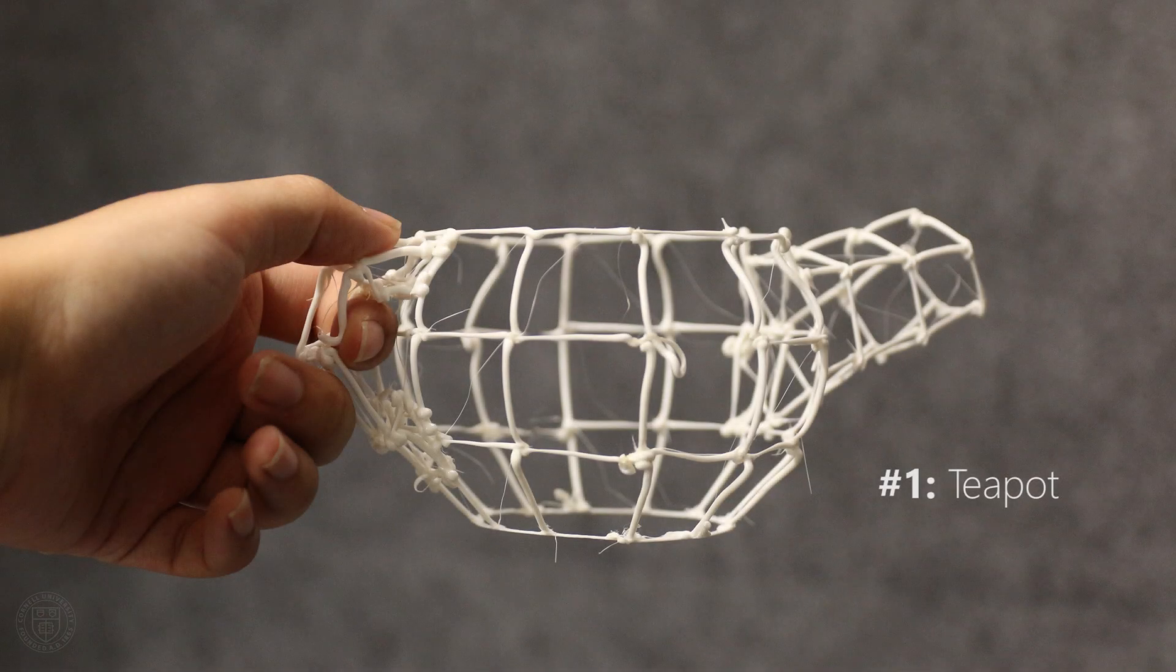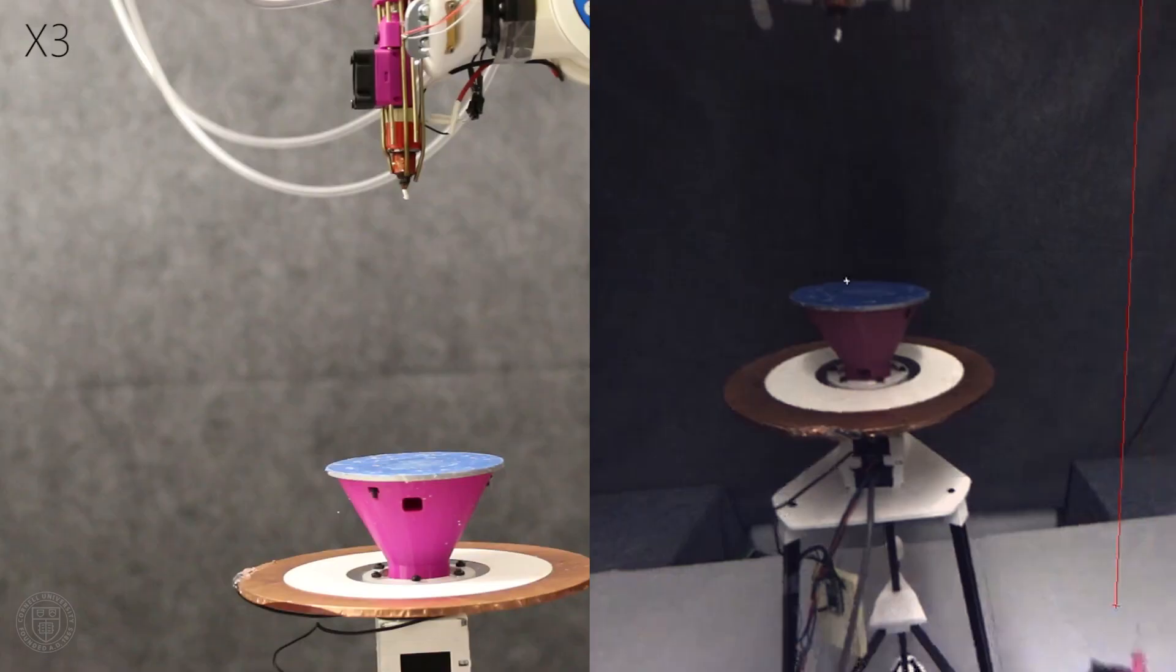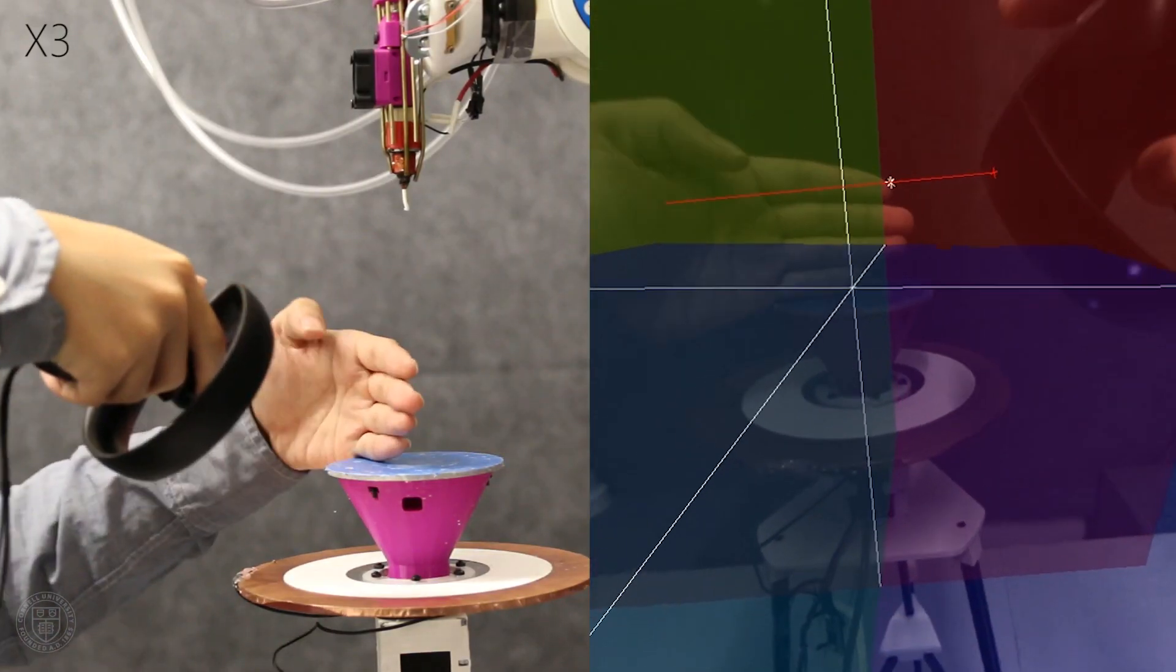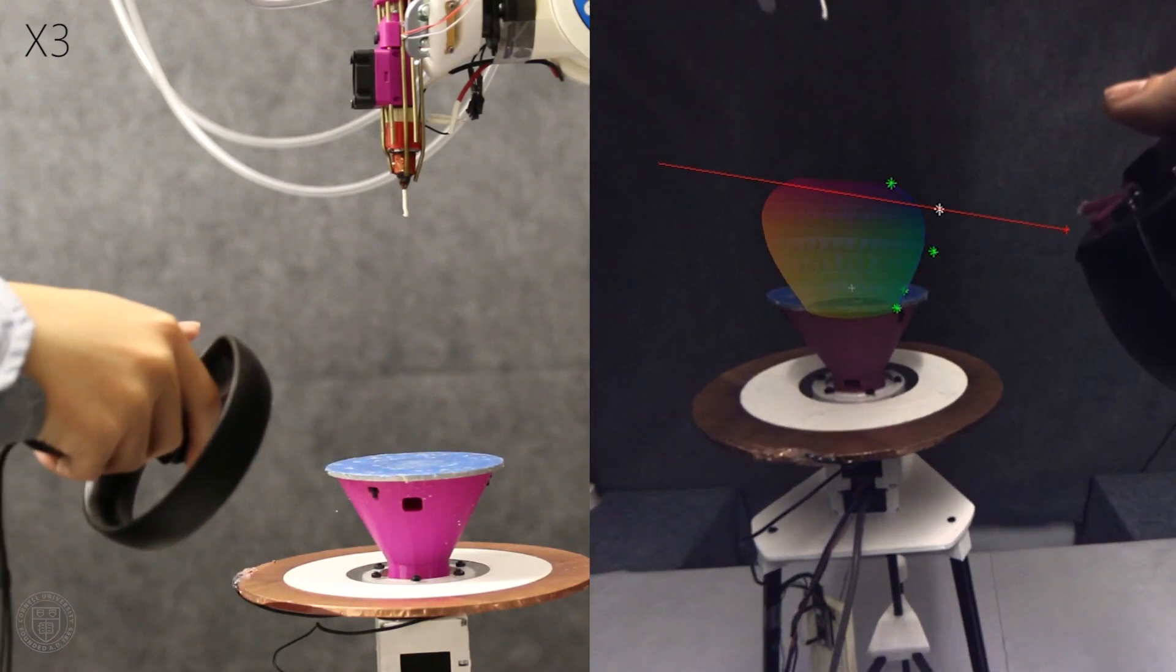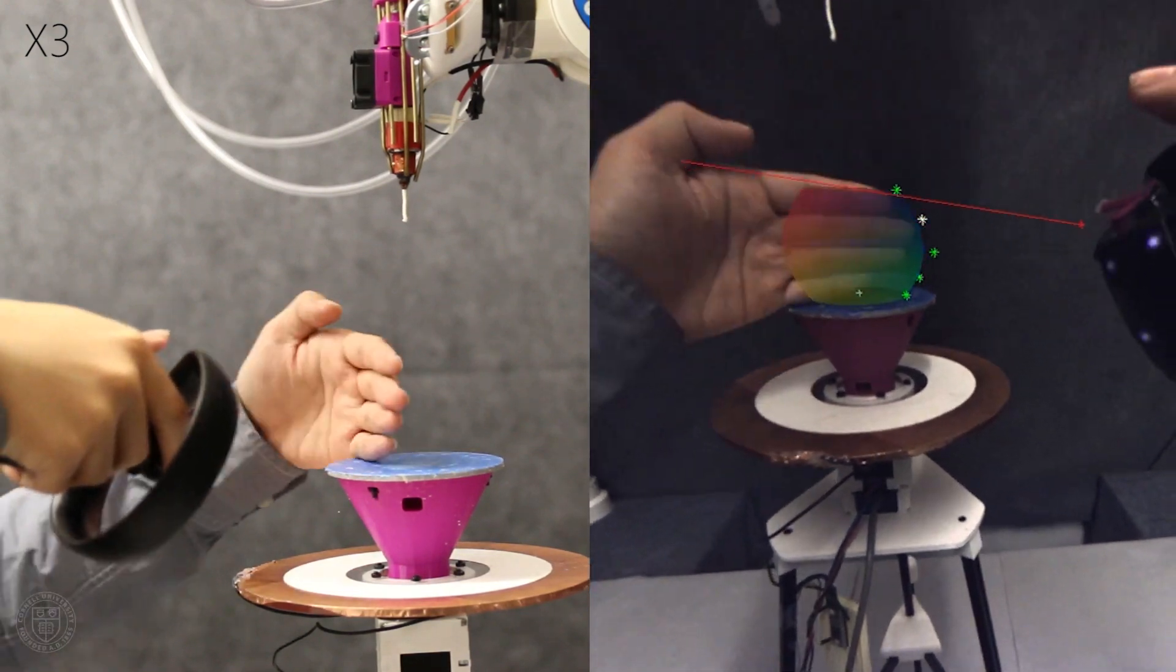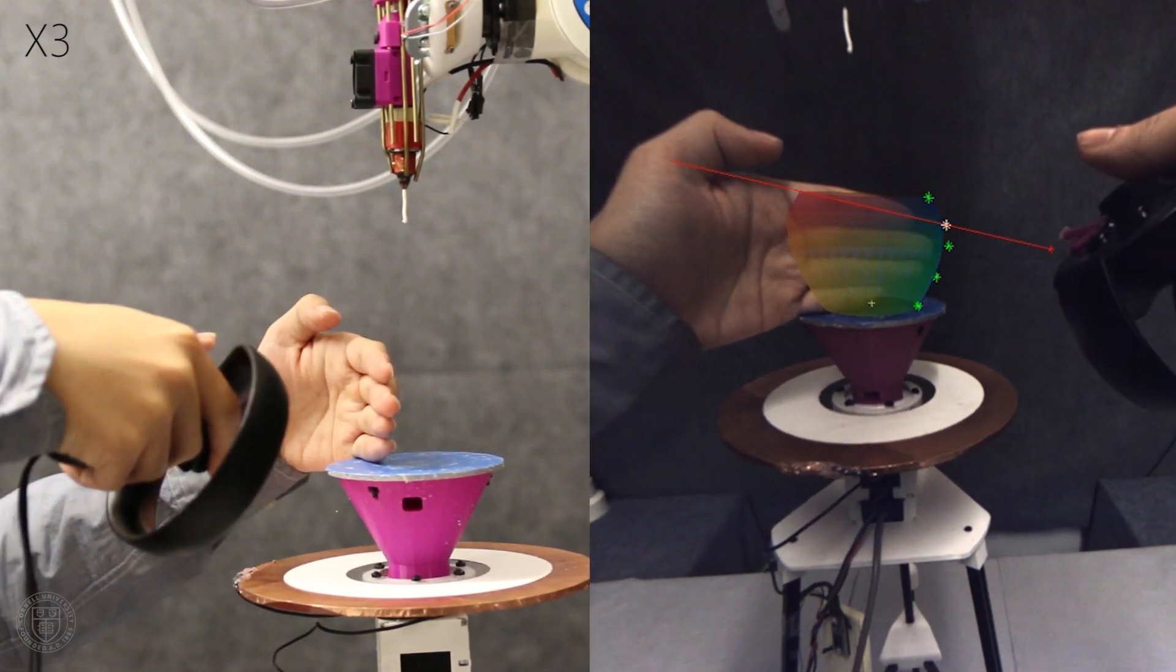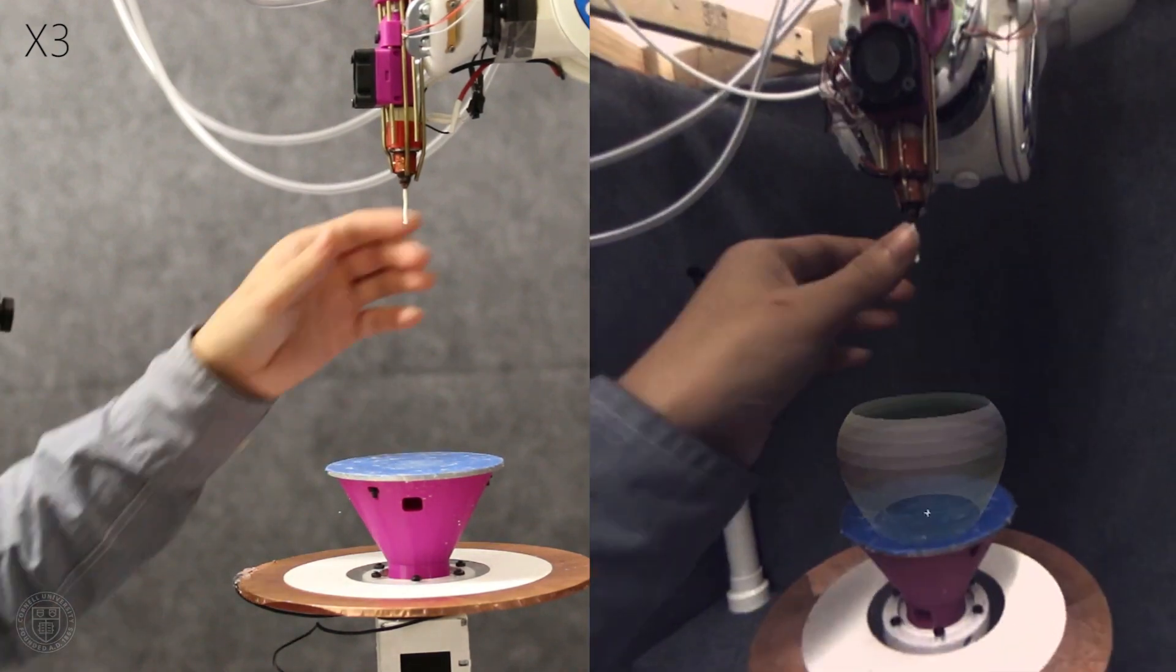We now demonstrate ROMA's interactions by designing a teapot from scratch. Using the width of his hand as a design reference, the user creates a teapot body in augmented reality. He then refines the shape of the teapot body with spline control points.